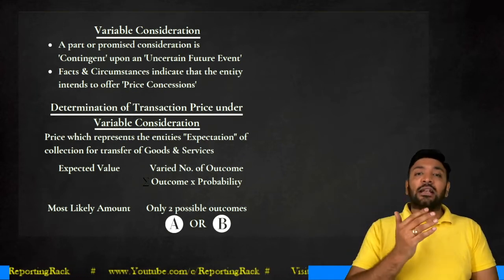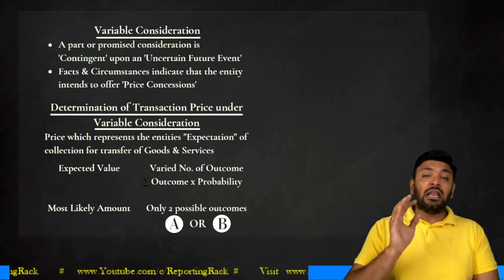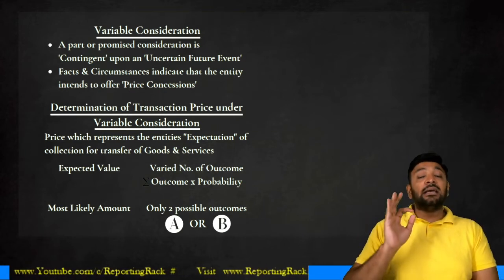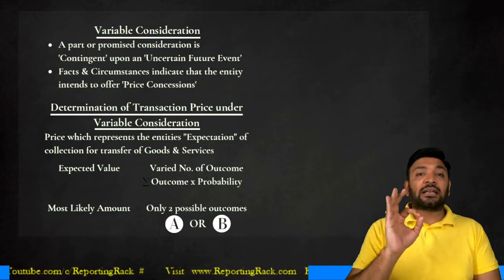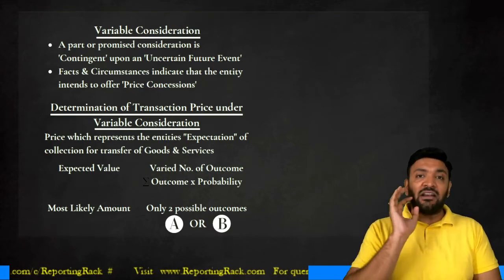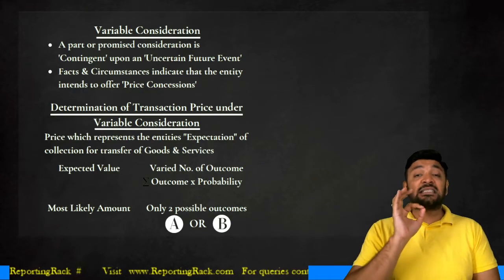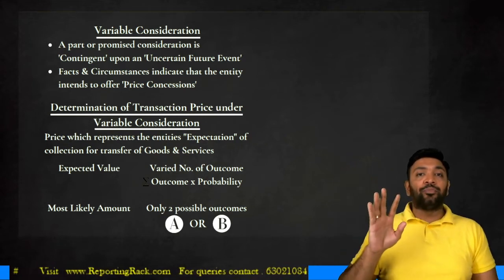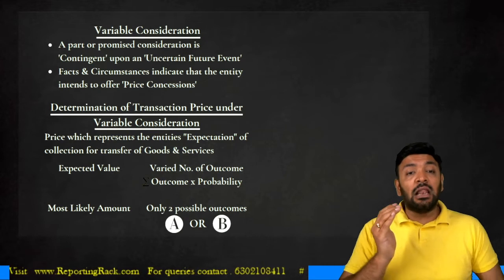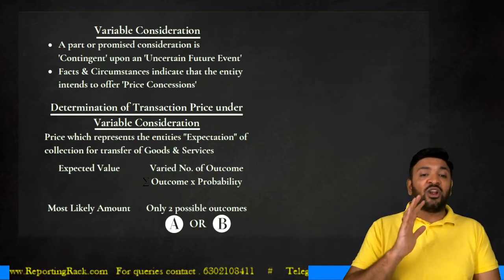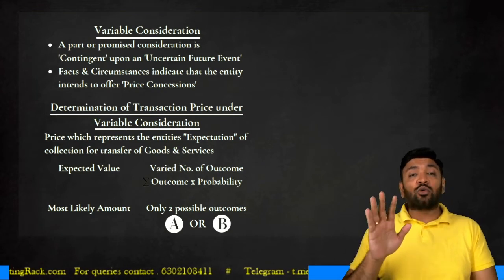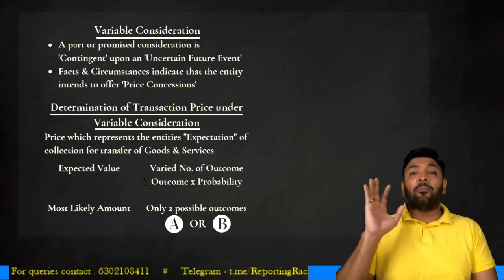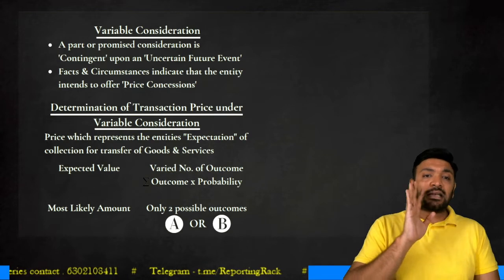When there are more than two outcomes — three or more possible outcomes — I cannot use the most likely amount. In such cases I use the concept of expected value. The expected value transaction price equals the sum of all the outcomes multiplied by their probability. Wherever the transaction price has more than two outcomes, I sum all possible outcomes multiplied by their probability to determine the transaction price.